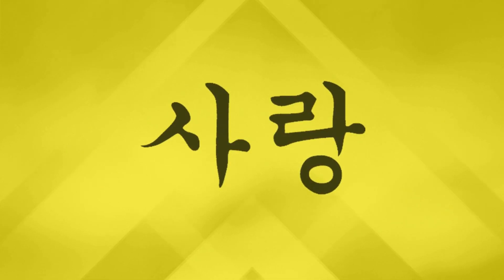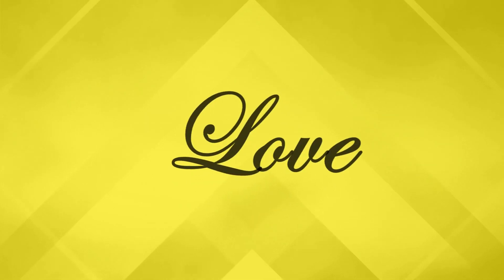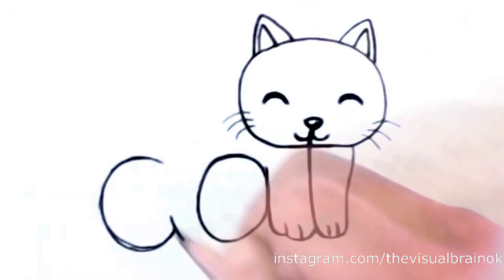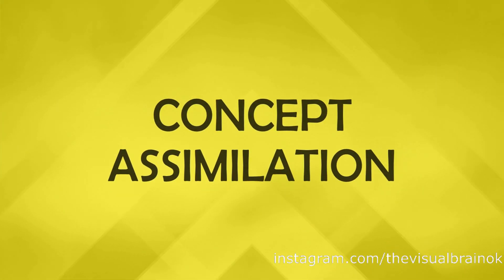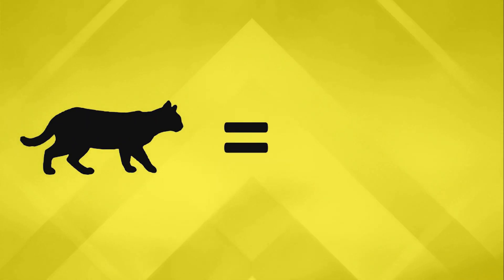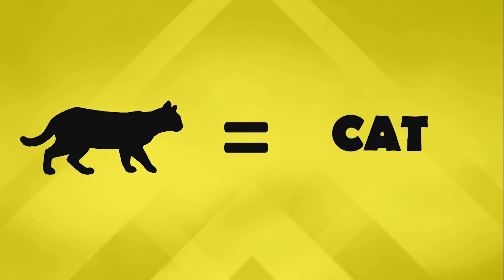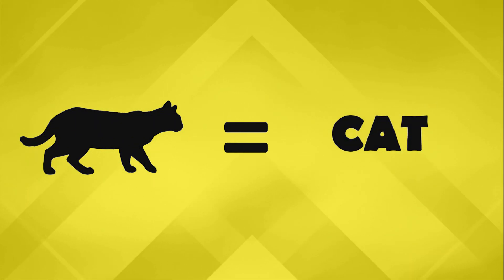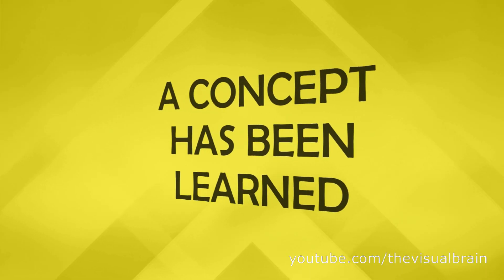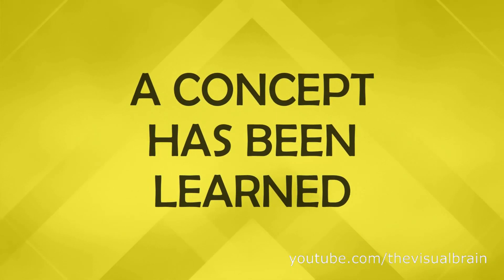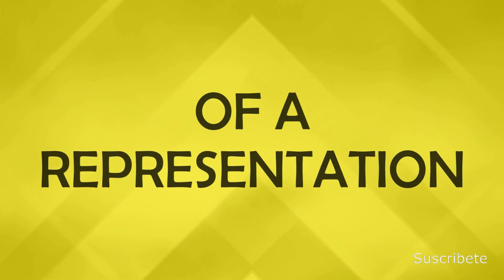Concept formation is assigning a symbol to an idea — for example, seeing a cat and knowing it's called a cat. On the other hand, we have concept assimilation. Experience will indicate, for example, that all quadruped animals that meow are identified with the word 'cat.' Once learned, it would not be necessary to see a cat to understand what is being talked about when someone mentions that concept.